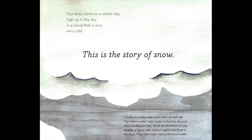Our story starts on a winter day, high up in the sky, in a cloud that is very, very cold. This is the story of snow. Clouds are mostly made of air, which we can't see. Then there is water vapor — water in the form of a gas — which we also can't see. We do see the billions of tiny droplets of liquid water and ice crystals that float in the cloud. They reflect light, making the cloud visible.